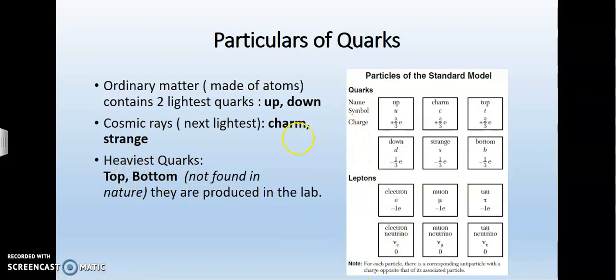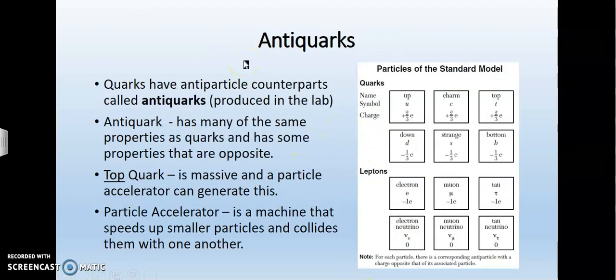Just as there are quarks, there are antimatter quarks. Quarks have antiparticle counterparts called anti-quarks, and these are produced in the laboratory. An anti-quark has many of the same properties as a quark and has some properties that are opposite. That's why it's anti - anti is a Latin word meaning against or opposite. A top quark is massive, and a particle accelerator can generate this by smashing atoms together. The particle accelerator is a machine that speeds up smaller particles and collides them with one another. When matter meets antimatter, they annihilate each other and turn back into light.